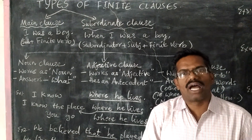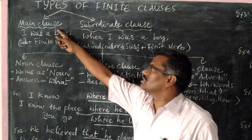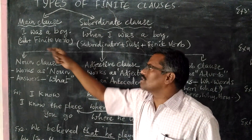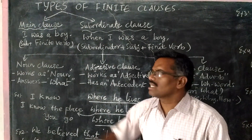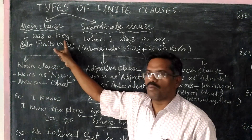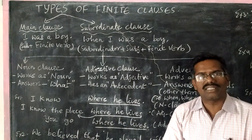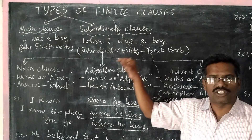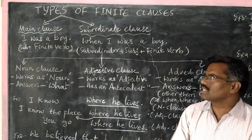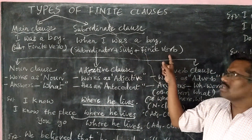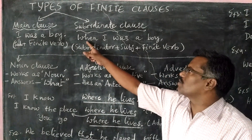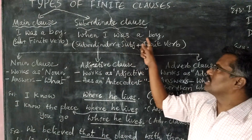There are two important types. One is main clause, another is subordinate clause. Main clause is the clause which has one subject and one finite verb. Example: 'I was a boy.' And subordinate clause is the clause which is introduced by a subordinator. The structure is: subordinator plus subject plus finite verb. Here the example is: 'when I was a boy.'